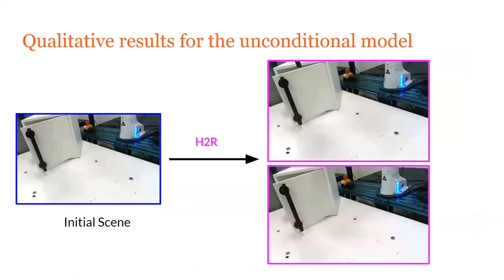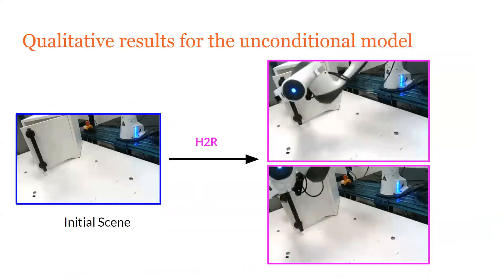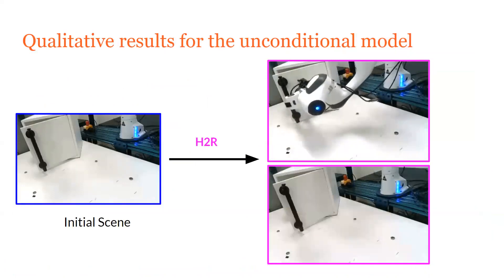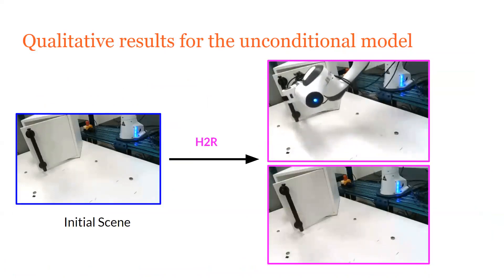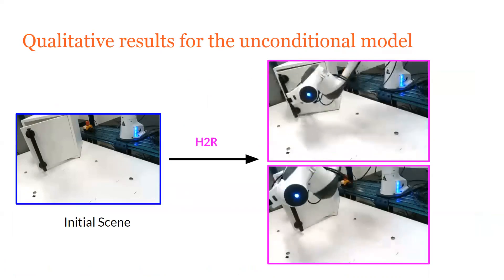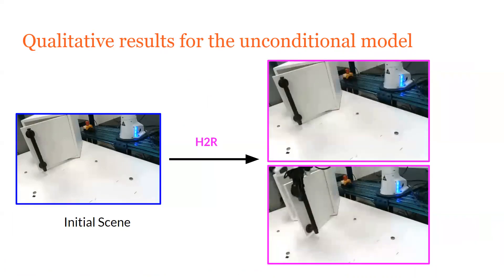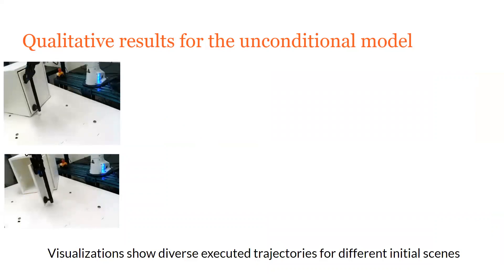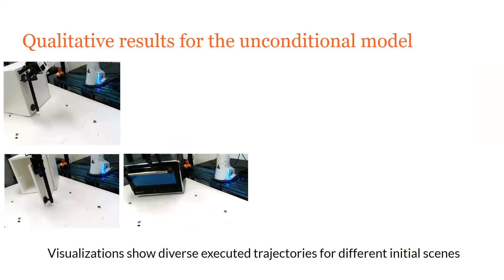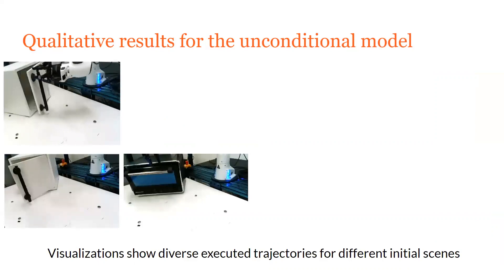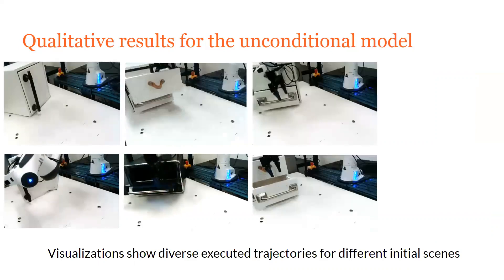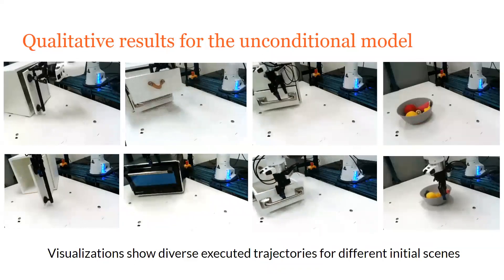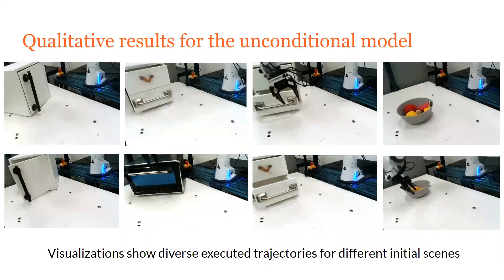Now let's look at some qualitative results for the unconditional model. Here the model receives just an initial image of the scene, and we can see that it predicts diverse plausible trajectories — in this case corresponding to opening and closing of the door. We observe similar results across different types of objects: a door has a vertical hinge, a toaster has a horizontal hinge, drawers can be moved linearly, and a bowl of fruits can be moved around the table in different directions.